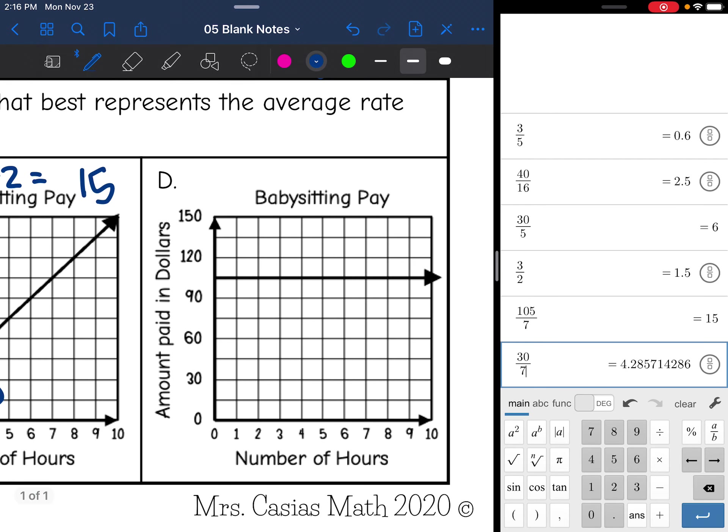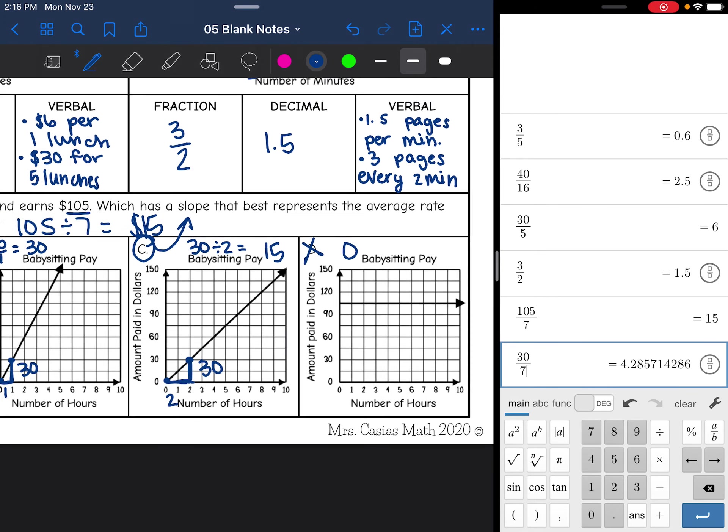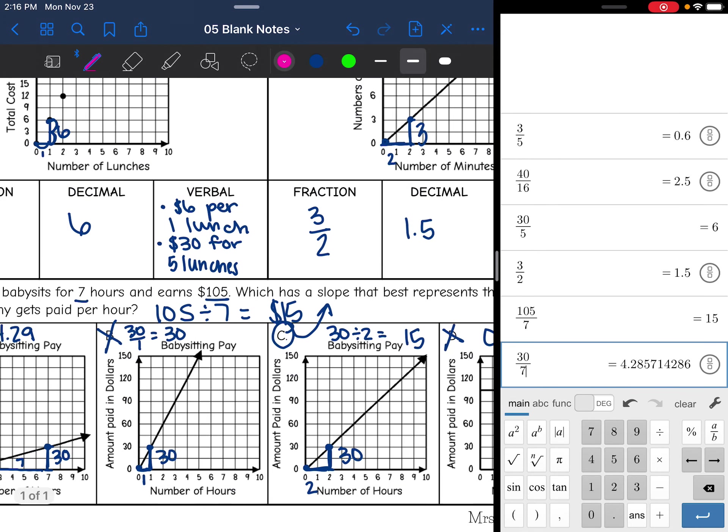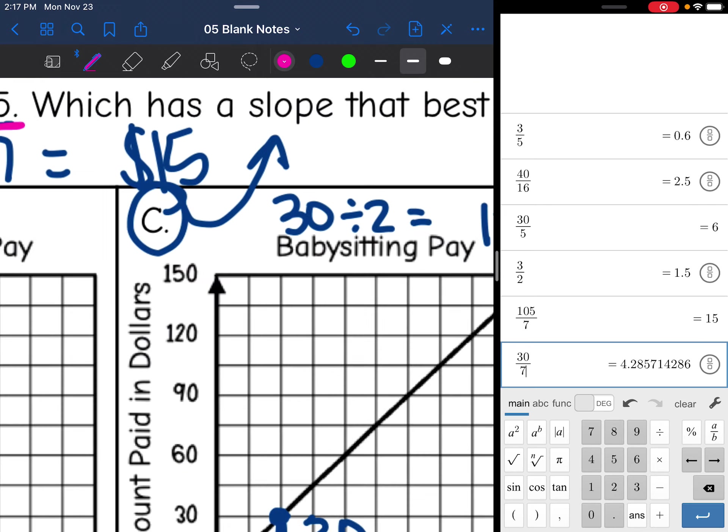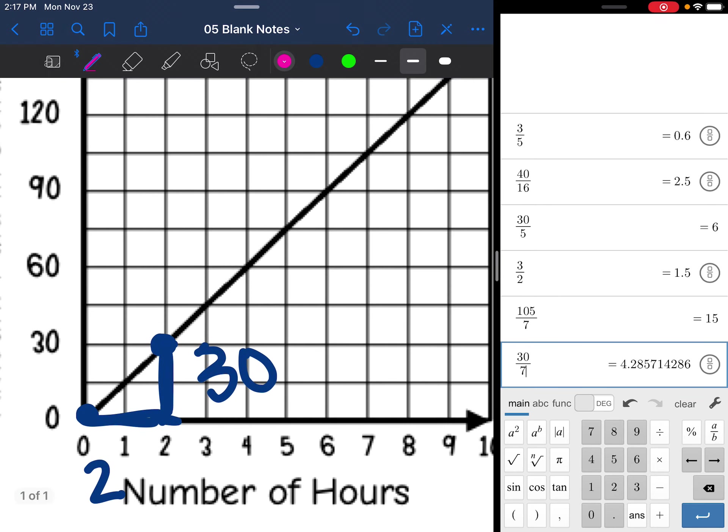Well, this doesn't make sense because if she's getting paid per hour, that means the line should be increasing. This one obviously has a slope of 0 since it's a horizontal line. That does not match our slope of 15. One thing we can double check. Remember, they told us 7 hours earns $105. We can check that on the graph. 7 hours is at $105 because $105 would be in between $90 and $120.